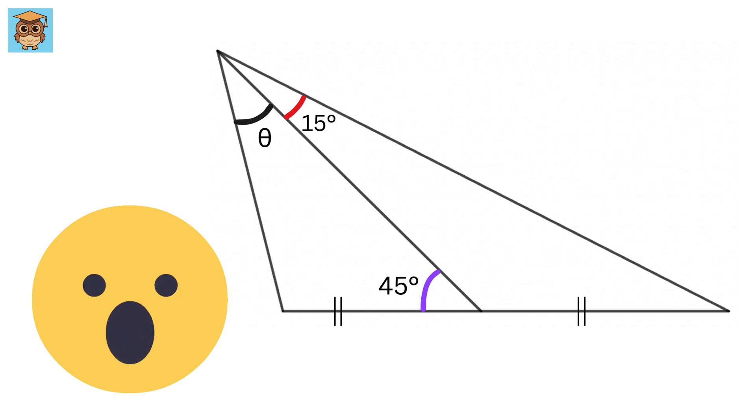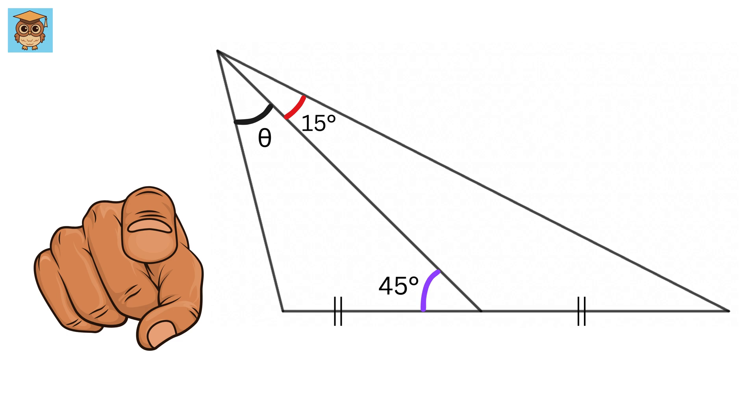This is such an amazing geometry problem and the final answer will fully satisfy you. In this triangle we are given these angles which are 15 degrees and 45 degrees. Also, we are given that this length is equal to this length. Our job is to find the value of this angle theta. So, can you solve it?